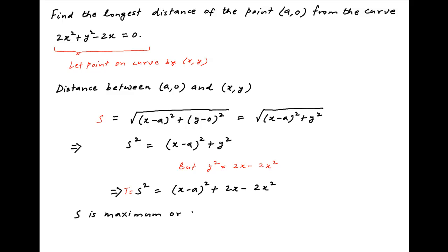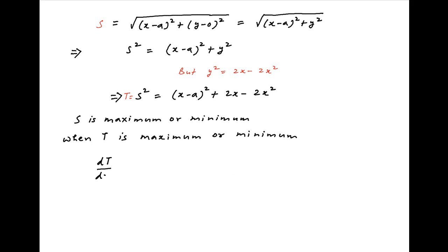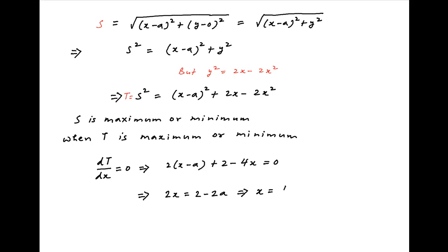Clearly s is maximum or minimum when t, which equals s squared, is maximum or minimum. The maximum or minimum value of t is reached when the derivative of t with respect to x equals zero, giving 2(x minus a) plus 2 minus 4x equals 0. This implies 2x equals 2 minus 2a, or x equals 1 minus a.